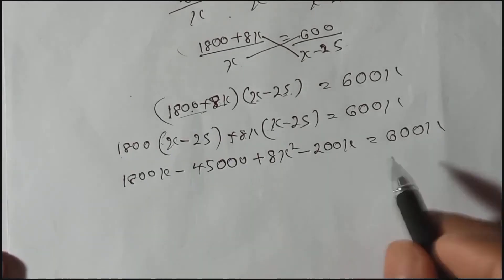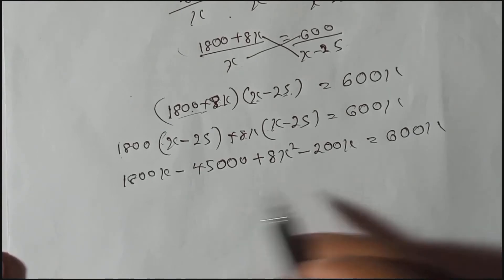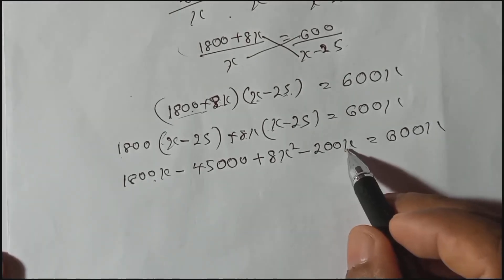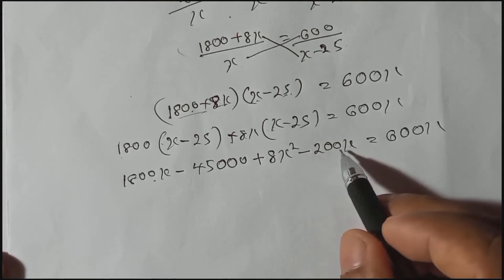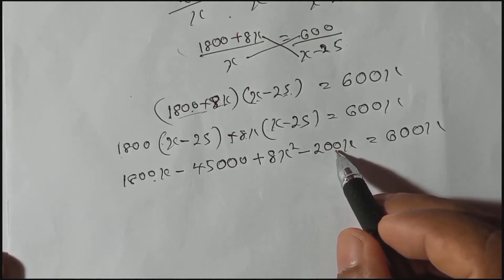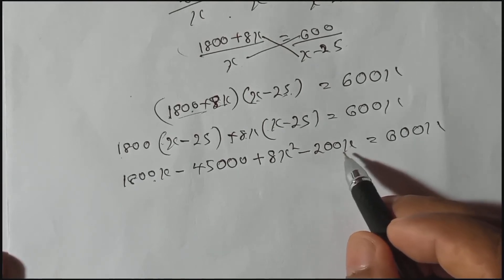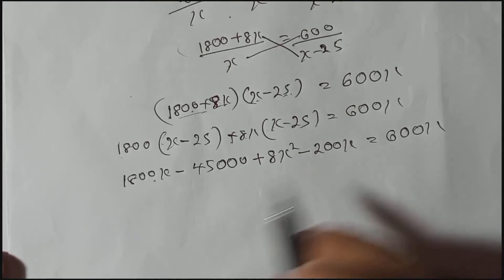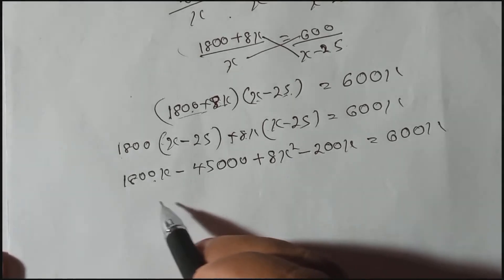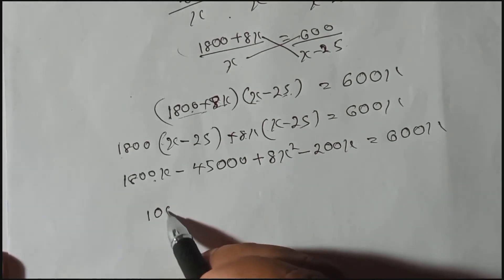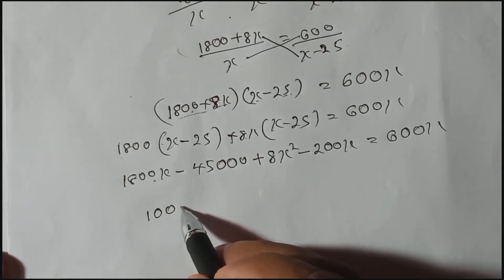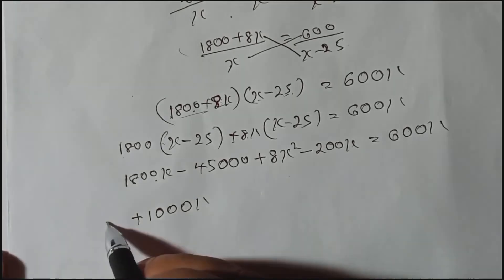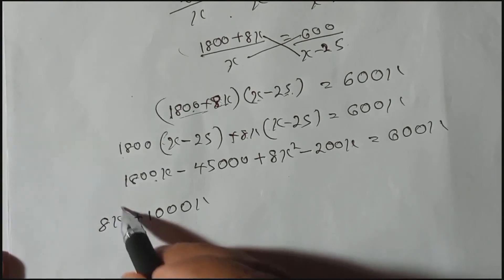Bring all terms to one side. 1800x minus 200x minus 600x simplifies: 1800x minus 200x is 1600x, and subtracting 600x gives 1000x. So we have 8x squared plus 1000x minus 45,000 equals 0.